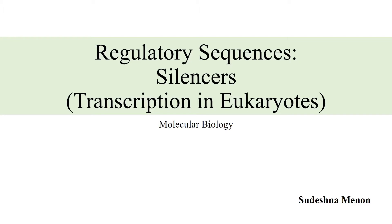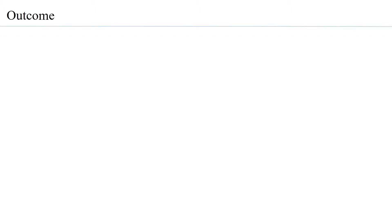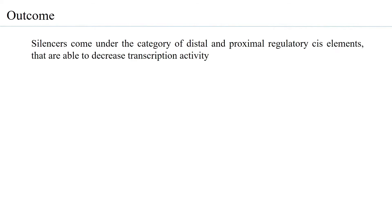Silencers are regulatory sequences influencing transcription in eukaryotes. As the word suggests, these cis-elements are responsible for repressing transcription. Silencers come under the category of either distal or proximal regulatory cis-elements that are able to decrease transcription activity. They are complete opposites of enhancers.